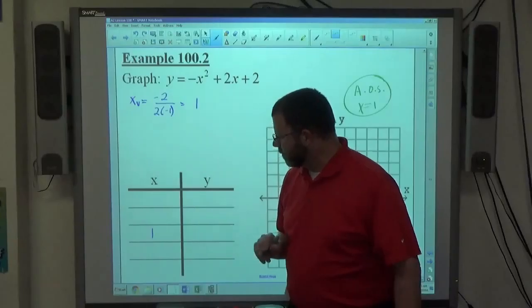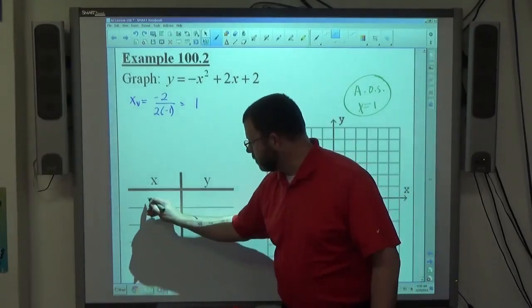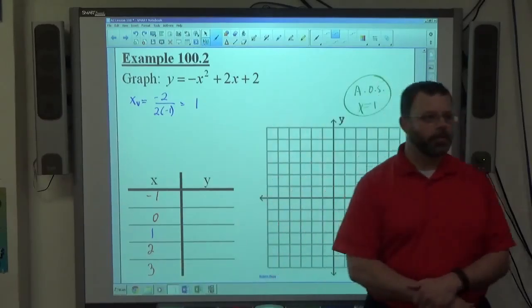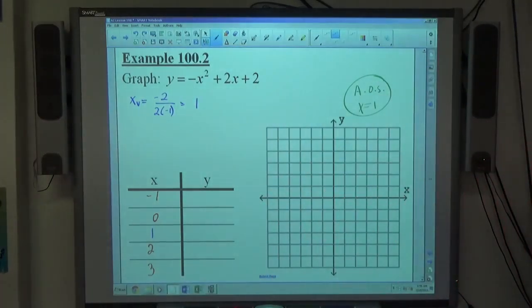What other numbers should I pick over here? Negative 1, 0, 2 and 3, right? Pick 2 numbers smaller than 1, pick 2 numbers bigger than 1.